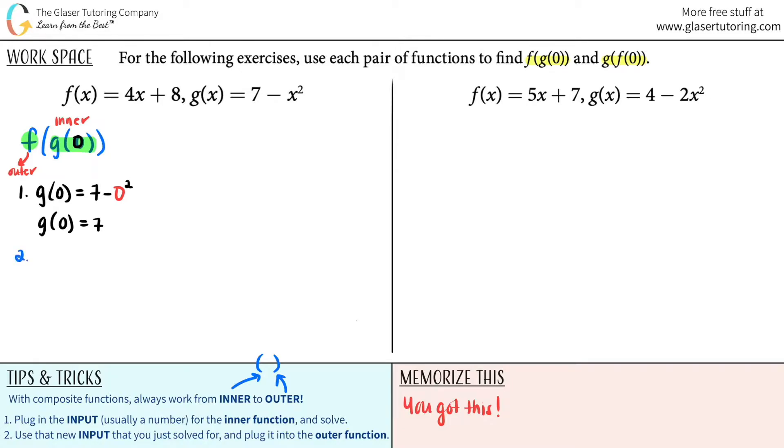Number 2 is finally taking that outer function, which was the f function. So f of what, though? Oh, it's the answer to what we had before. So in this case, it's f of 7. And now I look at the f function. Any time that I see an x value, right here, I'm going to plug in a 7. So it would be 4 times 7, and then plus 8. And then just do your math. So f of 7 equals 28 plus 8, which is 36.